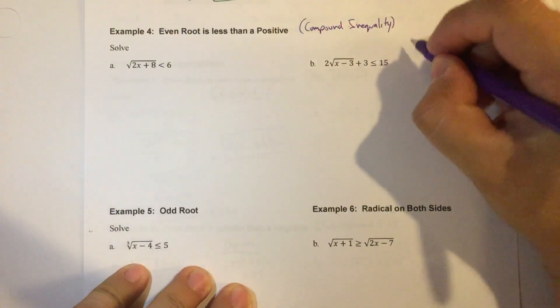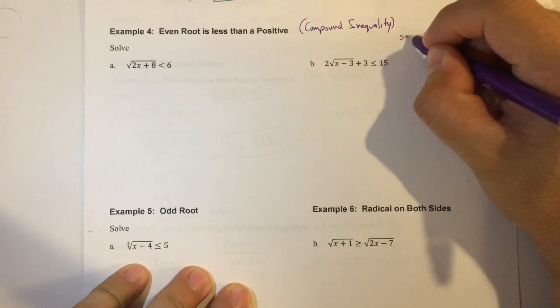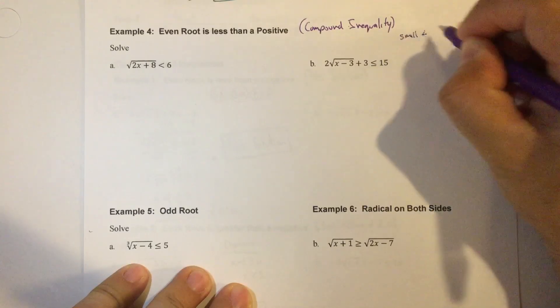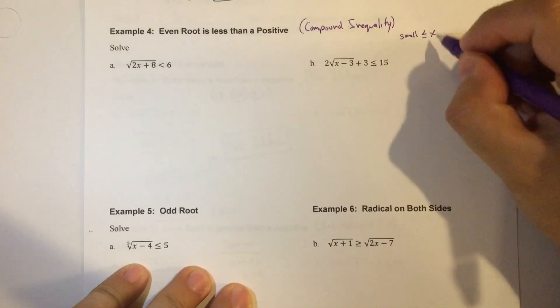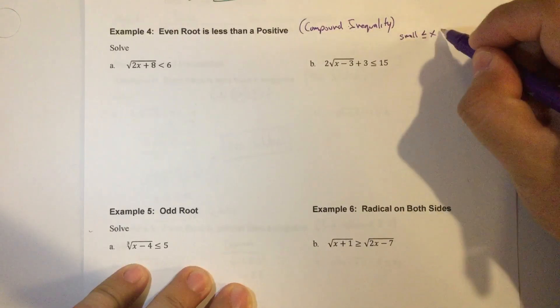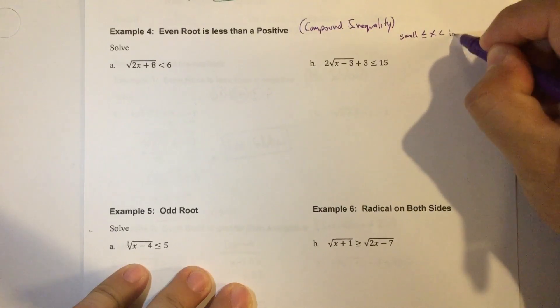So with a compound inequality, it's going to be small number is less than or equal to, depending on your problem, or it should be equal to because it's also going to be the starting point, is less than or equal to the larger number.